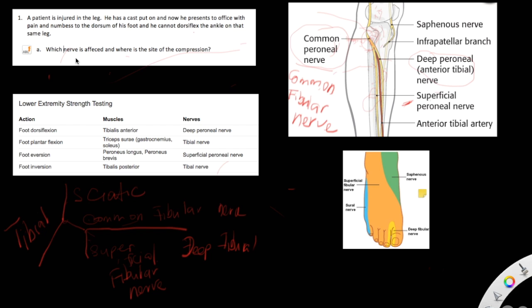Which nerve is affected and where is the site of the injury? From the stem, we see that the patient presents with numbness to the dorsum of his foot, and we know that sensory innervation to the dorsum of the foot is supplied by the superficial fibular nerve — another name for this nerve is the superficial peroneal nerve.